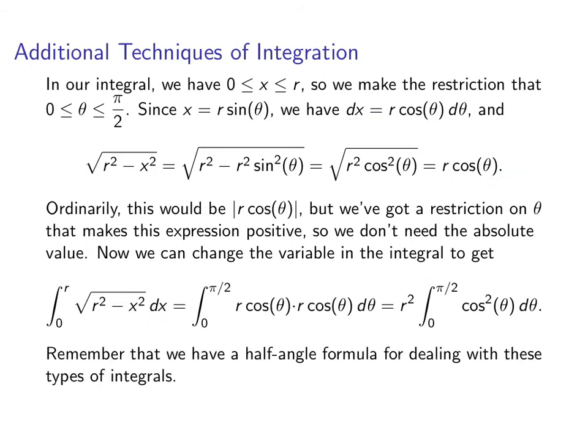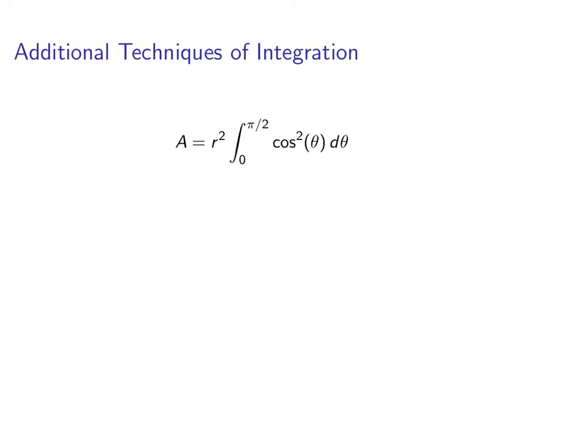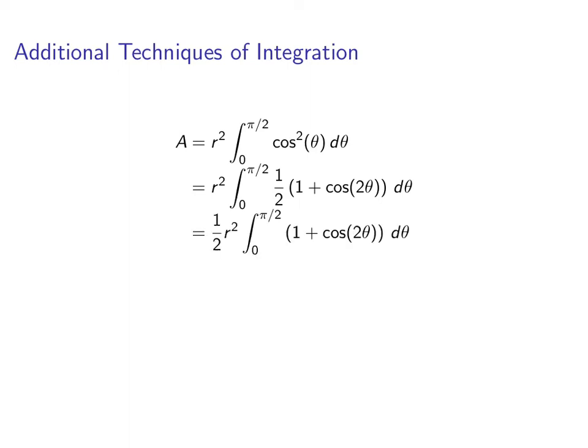Alright, so now we're trying to integrate cosine squared. Remember, we have half-angle formulas for this. Cosine squared theta is equal to 1 half times 1 plus cosine 2 theta. So we're going to replace our integrand with 1 half times 1 plus cosine 2 theta. So a equals r squared times the integral from 0 to pi over 2 of 1 half times 1 plus cosine 2 theta d theta. We'll pull the 1 half out, and now we can write down an antiderivative: theta plus 1 half sine of 2 theta, evaluated from 0 to pi over 2.